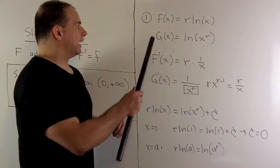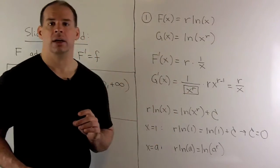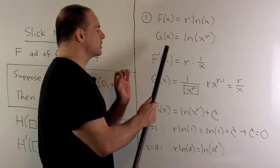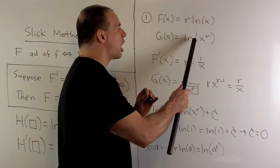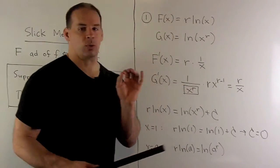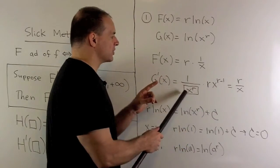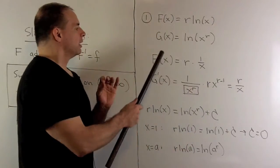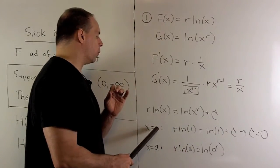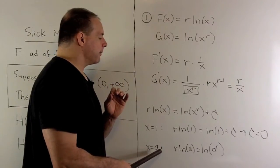For our first property with the slick method, let capital F equal r natural log of x, and capital G of x equal natural log of x to the r. Taking the derivative of F: we have r times the derivative of natural log, which is just one over x — giving r over x. Taking the derivative of G: x to the r is inside the box, so the derivative of natural log gives one over x to the r, and then the chain rule says take the derivative of the inside, giving r x to the r minus one. Cleaning this up gives r over x. So these derivatives are equal, meaning F equals G plus a constant. To find the constant, let x equal one: natural log of one equals zero, giving c equals zero. Then putting in x equal to a gives our identity.